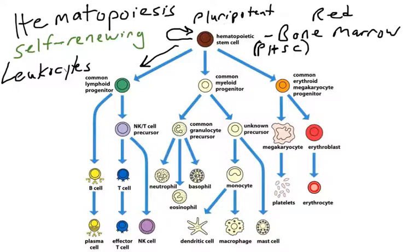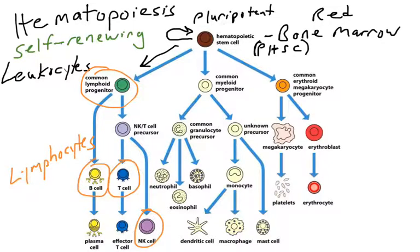When these pluripotent stem cells divide, some daughter cells will eventually become lymphocytes. A lymphoid progenitor cell can differentiate into three types of lymphocytes: B cells, T cells, and NK cells. B cells produce antibodies to combat infection, T cells kill virally infected cells or produce cytokines, and NK cells recognize abnormal cells in the body.